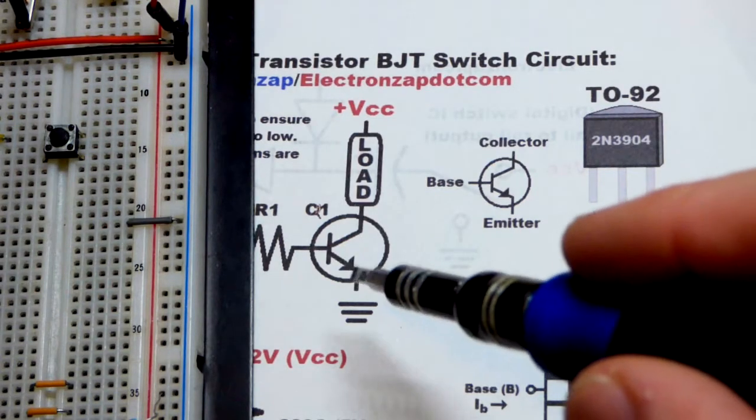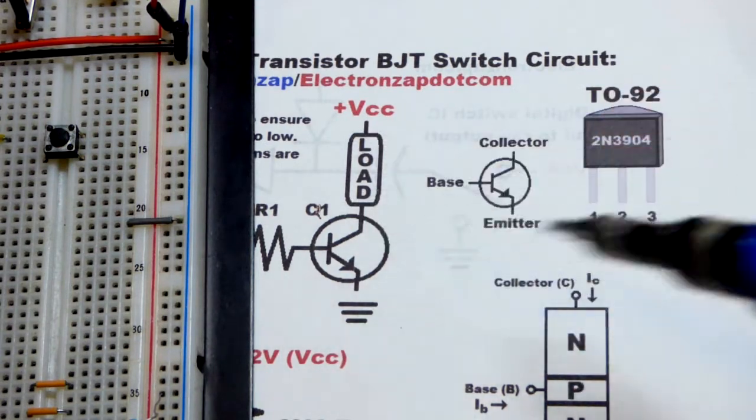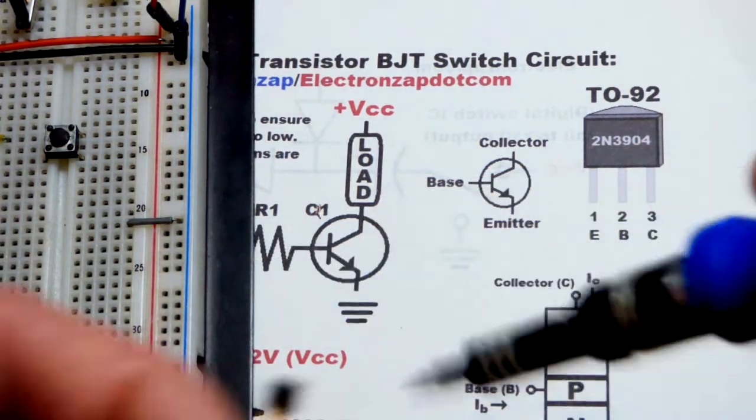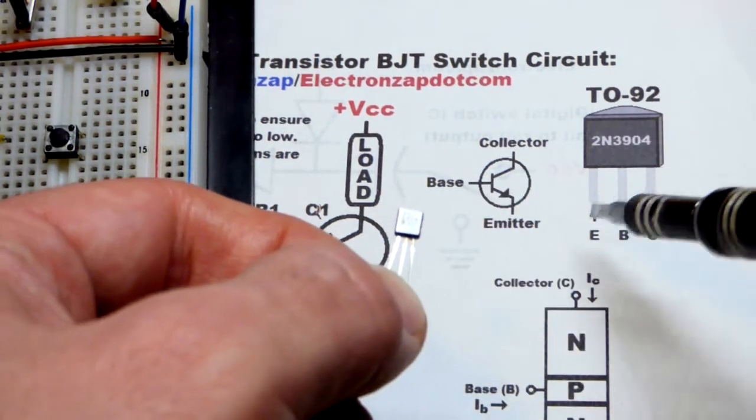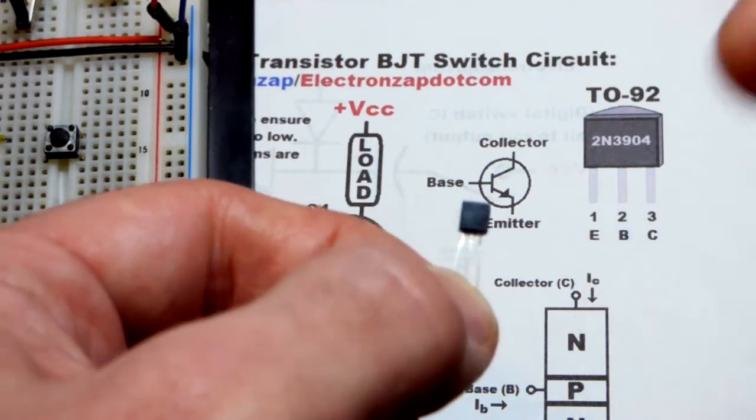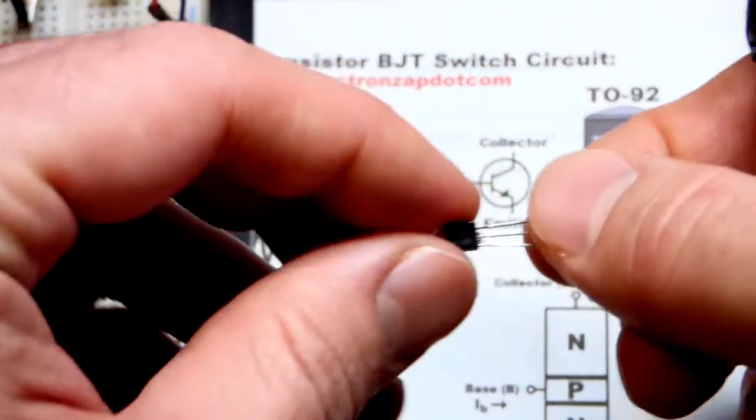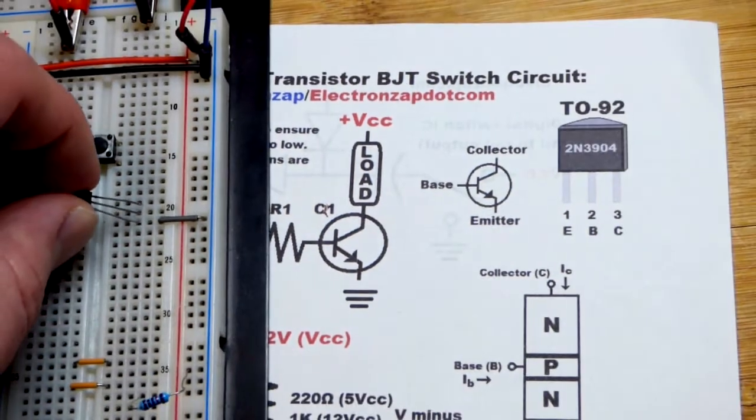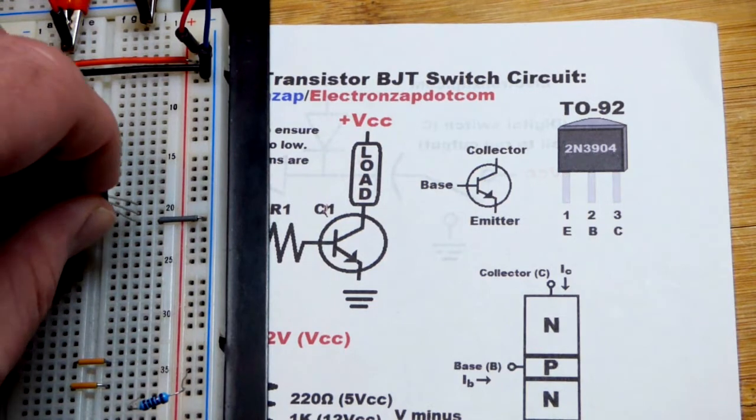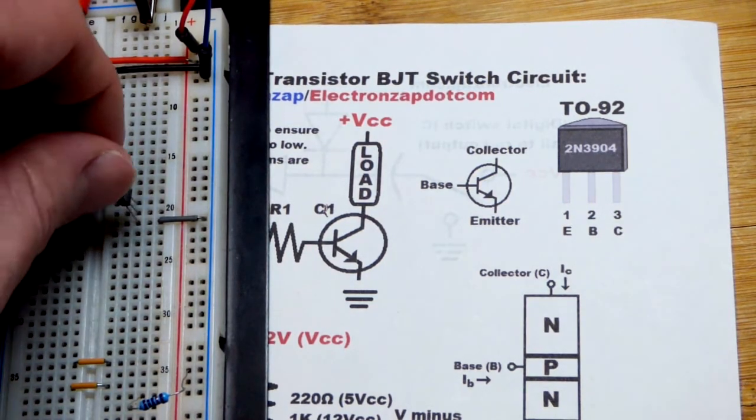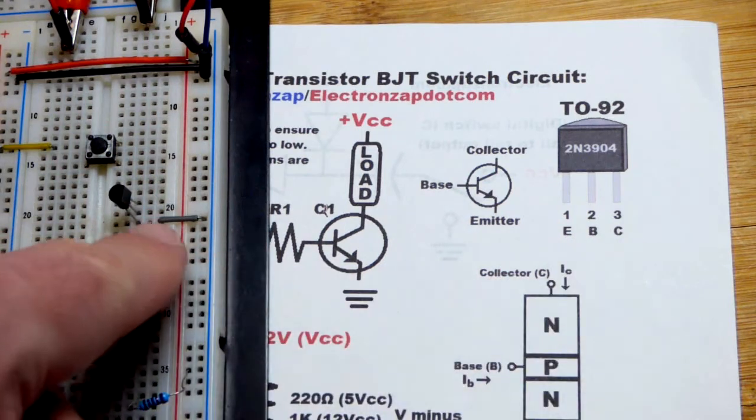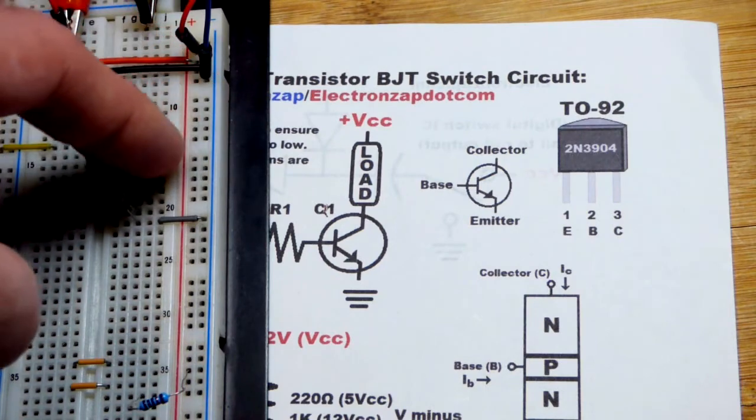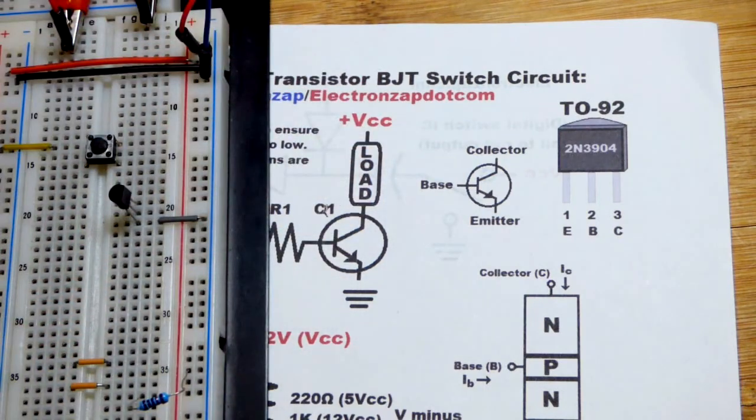The emitter for an NPN bipolar junction transistor switch circuit, the one with the arrow, goes to the negative rail or ground. Looking at the flat side, we can see the pin layout. Emitter is to the left pin. As far as the breadboard is concerned, it is the bottom pin. We'll plug it right there. Now we've got the emitter to the bottom, base to the middle where we'll give our signal, and then collector where the load is going to come from the positive side.